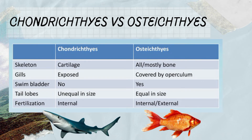Fish live in either fresh or salt water environments and are cold-blooded animals, though there are exceptions. There are two main groups of fish: Chondrichthyes and Osteichthyes, based on the composition of the endoskeleton. The endoskeleton of Chondrichthyes is made up of cartilage and they mainly live in marine habitats, while the endoskeleton of Osteichthyes is composed of bones and they are found in both marine and freshwater habitats. The scales of Chondrichthyes are covered by very small denticles known as placoid scales.